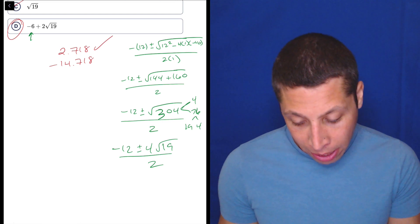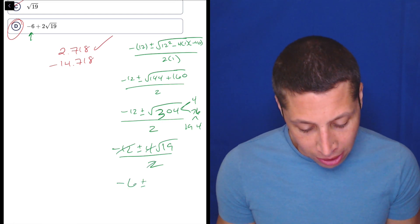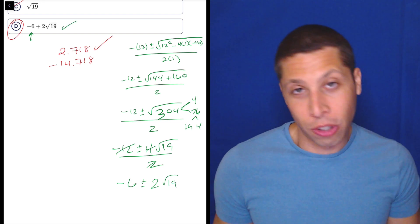And now, and only now, can we divide both or all the parts by 2 to get negative 6 plus or minus 2 root 19 over 1, which is choice D.